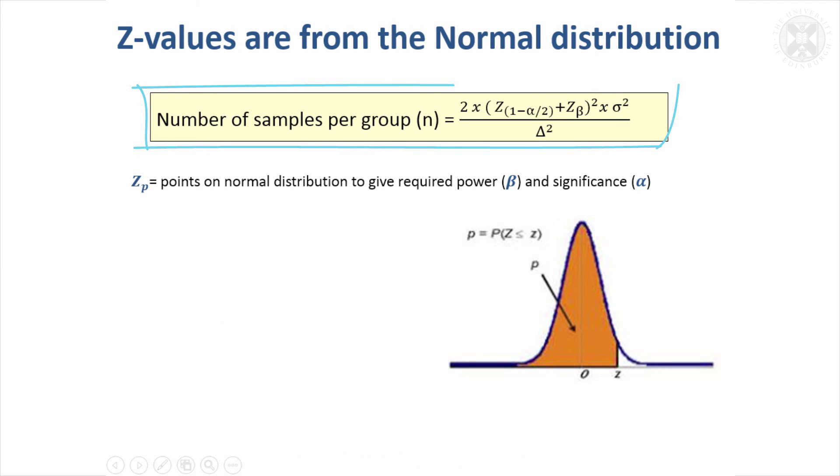So these Z statistics that went into the formulae, just to give a bit of background as to where they come from, they come from the standard normal distribution. This is a plot of the normal distribution. And the Z statistics are determined by the point where the area here is going to be equal to say the required power. So you'd want 90% of the area to be in this point to get the Z statistic for 90% power. But if beta was 80%, you wanted 80% power, Z would be a little bit lower to denote that.